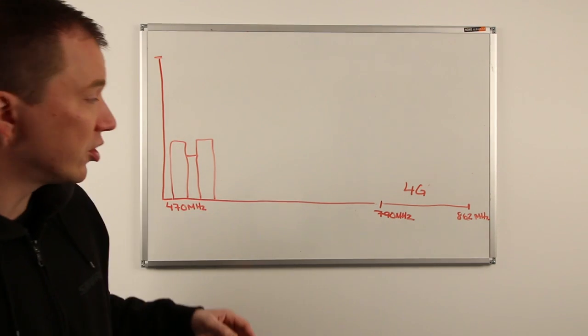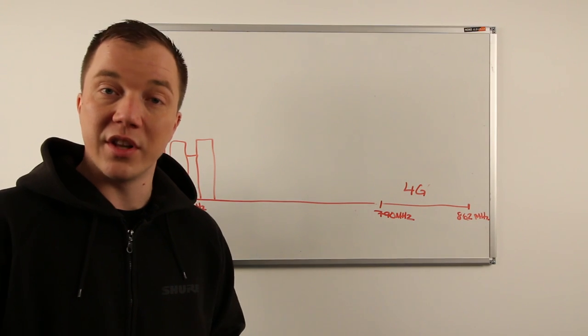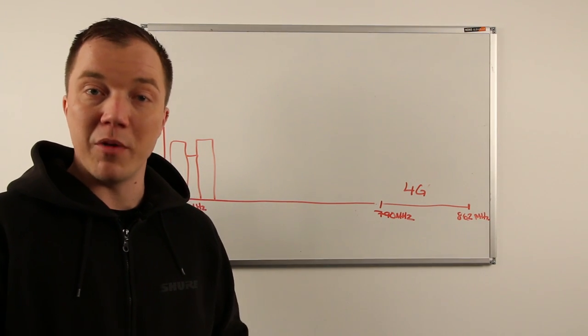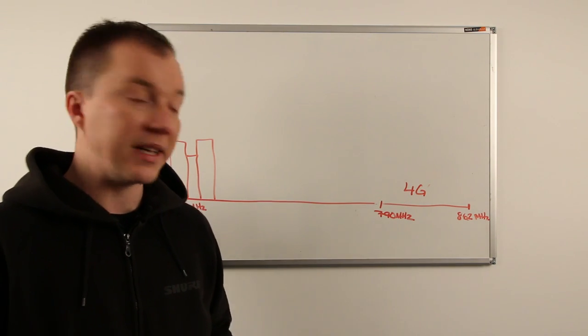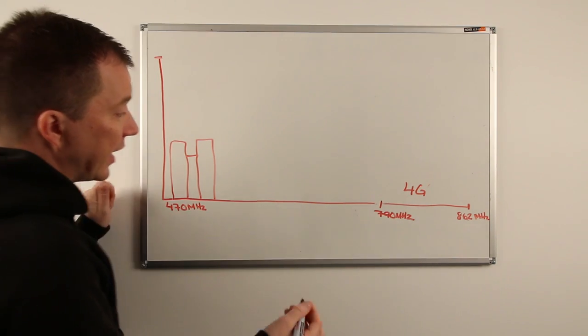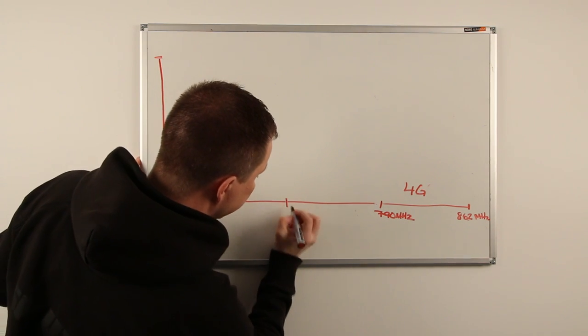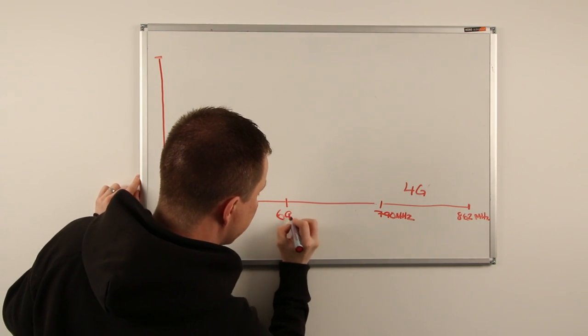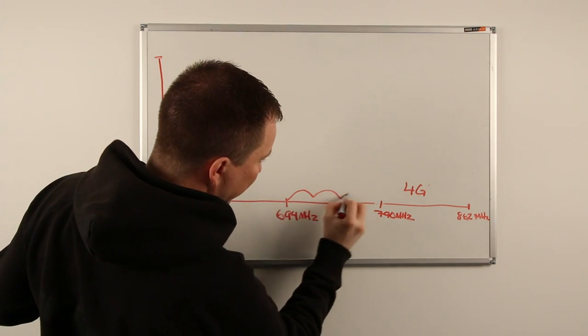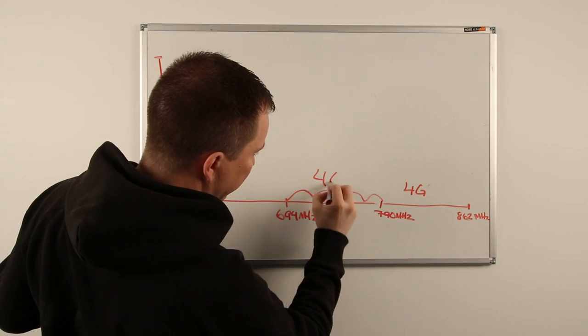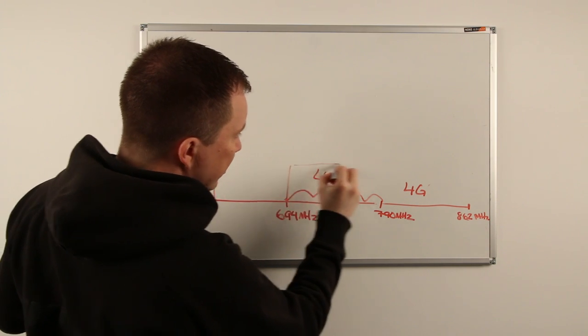Today, the wheels are actually in motion to clear further parts of the UHF band to mobile network operators because of the growing demand for 4G and high-speed data services. As we speak, the plans in the UK and across Europe are to clear 694 megahertz and allocate this spectrum also to 4G services.